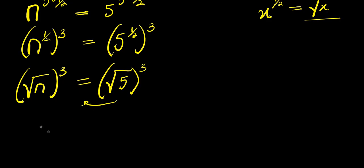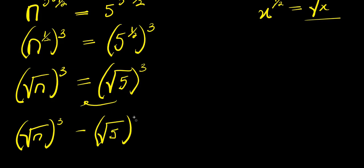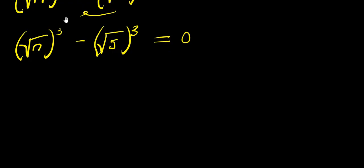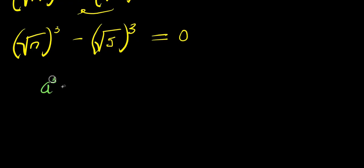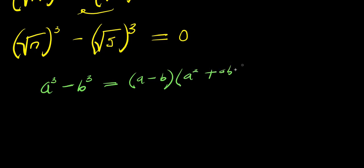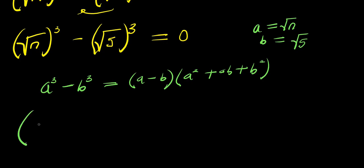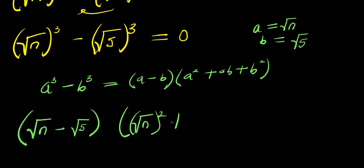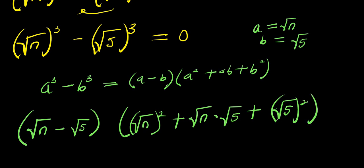Moving everything to one side, we have square root of n raised to the power of 3 minus square root of 5 raised to the power of 3 equals 0. Using the difference of cubes identity — a cubed minus b cubed equals a minus b times a squared plus ab plus b squared — where a is square root of n and b is square root of 5.